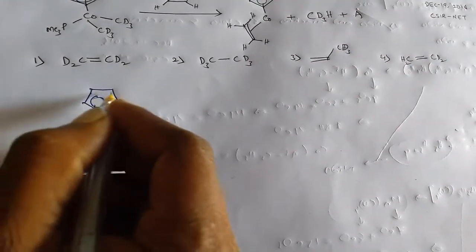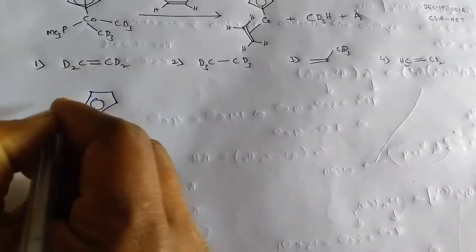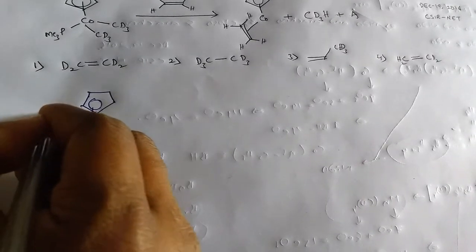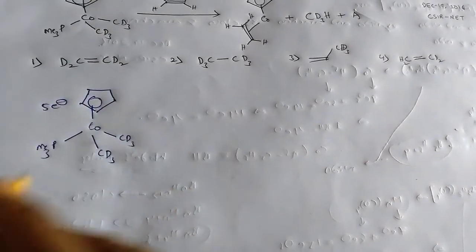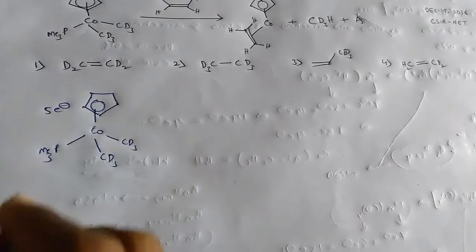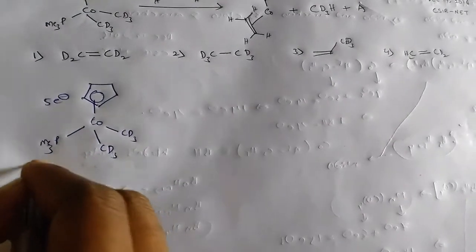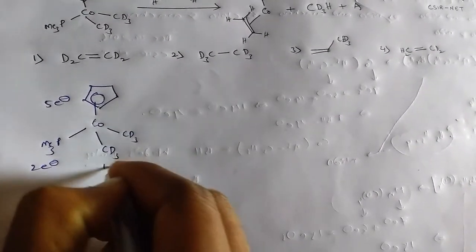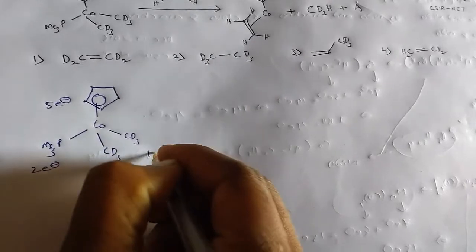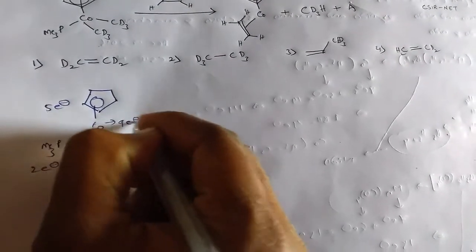Here, this cyclopentadienyl ring, it gives pi electrons in valence electron count. It gives 2 electrons and this is 1 electron and it gives 1 electron and cobalt has 9 valence electrons.